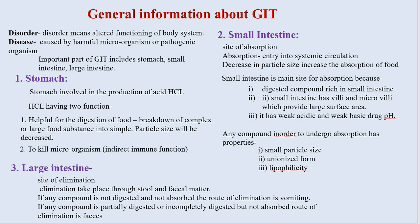The second part of the gastrointestinal tract is the small intestine. It is the site of absorption — absorption being the entry into systemic circulation. Decrease in particle size increases absorption. Small intestine is the main site for absorption because digested compounds are rich there, it has villi and microvilli providing large surface area, and it has a weak acidic and weak basic pH. Most drug molecules are absorbed at weak basic and weak acidic pH.